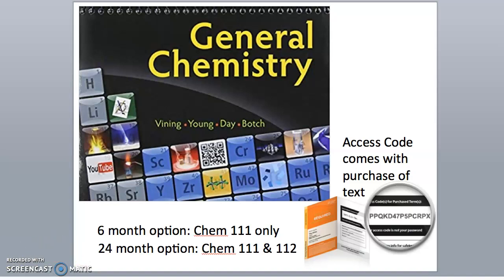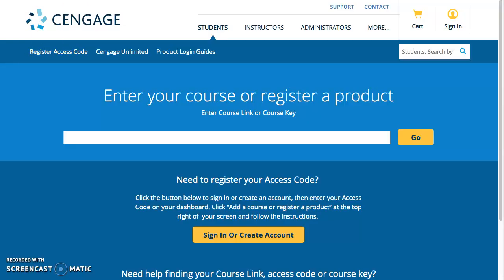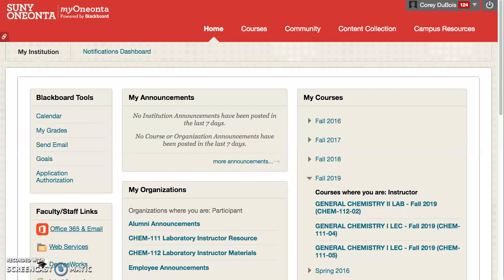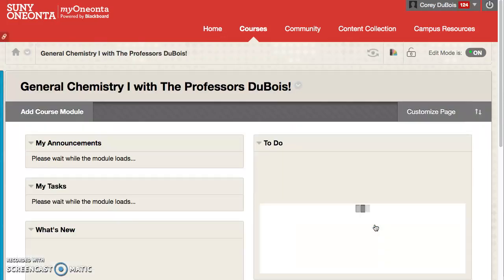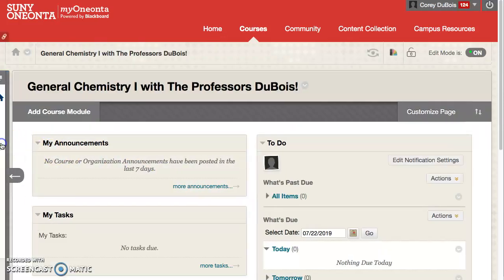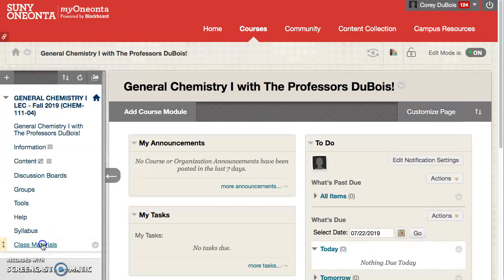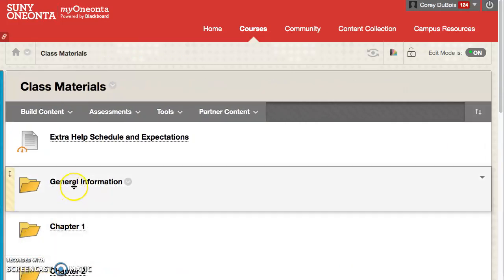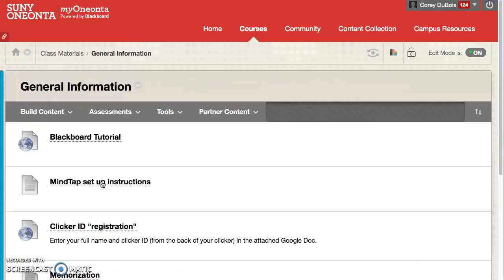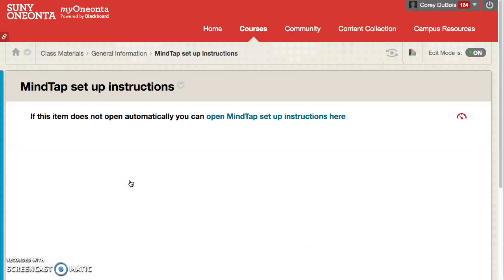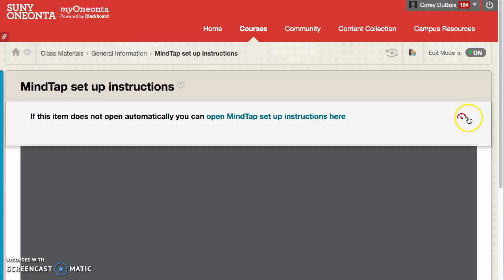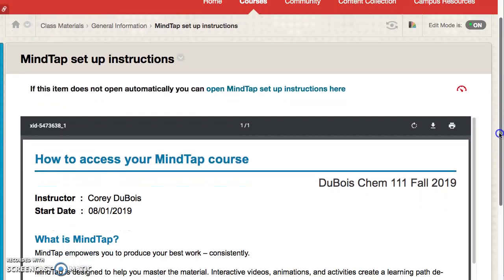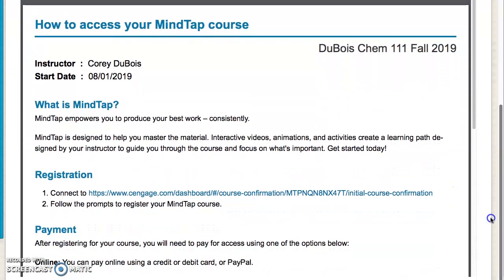We have posted the course code on Blackboard under the file MindTap Setup Instructions. Select our course in Blackboard and go to Class Materials on the left-hand side. Then select General Information. You can use the URL provided, or you can enter the course code manually, and you should now be registered in our course.